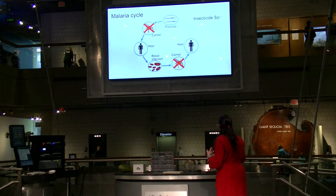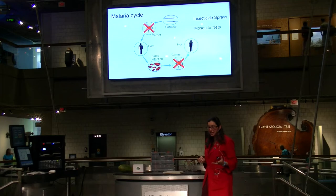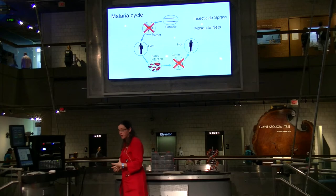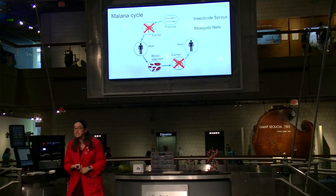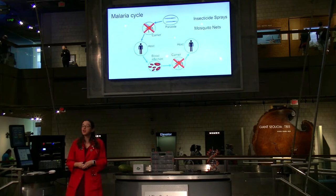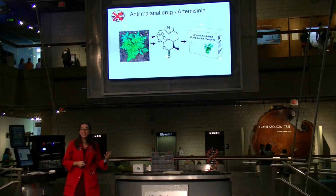Some of the most simple solutions are using insecticide sprays to kill mosquitoes in the area that might transmit malaria, and using mosquito nets to try and protect the people around them. That has tremendously helped in the past few decades, but there are issues with using insecticides, and mosquito netting is not always foolproof.